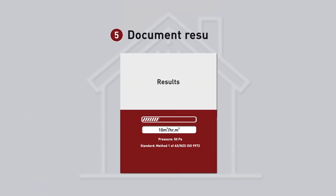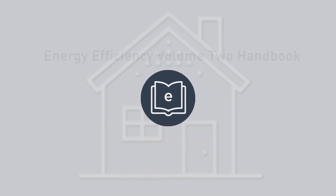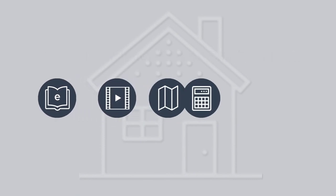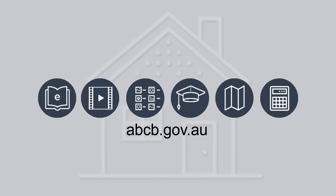Step 5: Document results. The test results should be clearly documented in a test report, confirming the procedure was in compliance with the relevant standard. This verification method is clearly outlined with worked examples in the Handbook Energy Efficiency NCC Volume 2. The Handbook and other resources are available from the ABCB website.